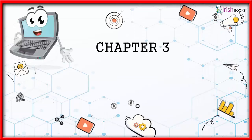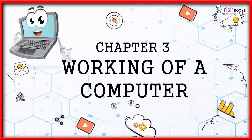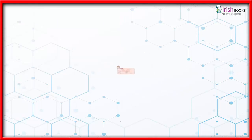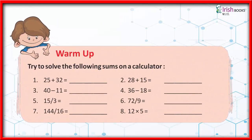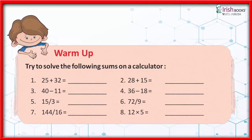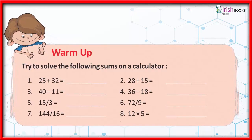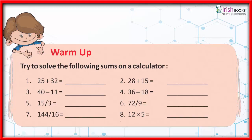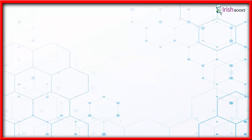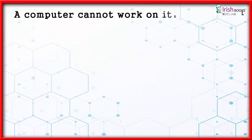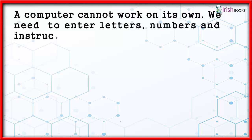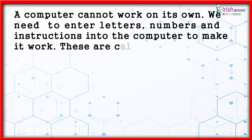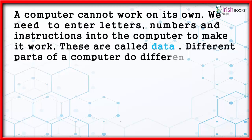Chapter 3: Working Off a Computer. A computer cannot work on its own. We need to enter letters, numbers and instructions into the computer to make it work. These are called data. Different parts of a computer do different tasks.